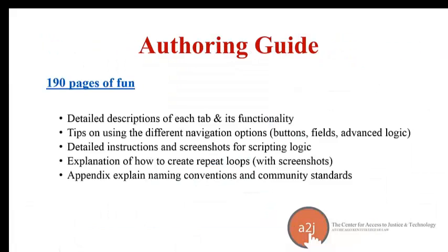The authoring guide is a hundred and ninety pages. It has detailed descriptions of every tab, every functionality in A2J Author, tips on navigation options, detailed instructions and screenshots for logic, explanations on how to create repeat loops with tons of screenshots, and several appendices that explain naming conventions and community standards for drafting. It's a live Google Doc, so it is constantly being updated as we add new features or fix bugs. I've tried to include literally hundreds of screenshots to help walk you through each step so you can compare the authoring guide with your guided interview.